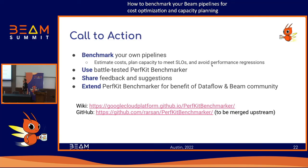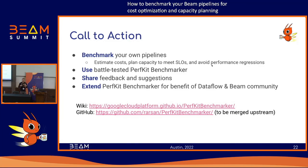This is the call to action: benchmark your own pipeline to estimate cost, plan capacity, and meet your future SLOs. Avoid performance regression as you upgrade to the latest template, or as you develop your own Beam pipeline. I've used PerfKit Benchmarker, which is battle-tested and designed to test across different cloud providers. You can test it across one cloud provider or across runners and run through all different configurations for your pipeline. Share feedback and suggestions — it took me three weeks to add streaming template support to the GCP Dataflow provider benchmark. We can really move the needle on this.